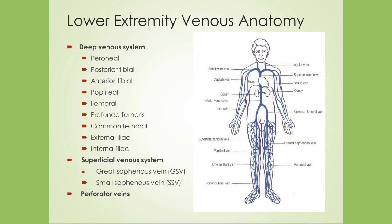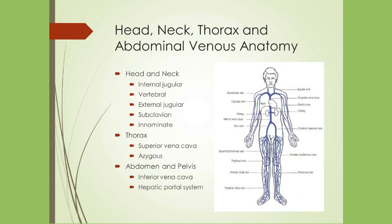The great saphenous vein, which is the longest vein in the body and may sometimes be referred to as the long saphenous, begins anterior to the medial malleolus and traverses the upper medial thigh to join the common femoral vein at the inguinal ligament. The small saphenous vein, sometimes referred to as the lesser saphenous, passes along the lateral side of the foot and joins the popliteal vein behind the knee. Perforator veins are located distally at the medial malleolus, medial calf, and distal medial thigh and allow blood flow from superficial veins to deep veins, preventing blood from flowing backwards into the superficial system.